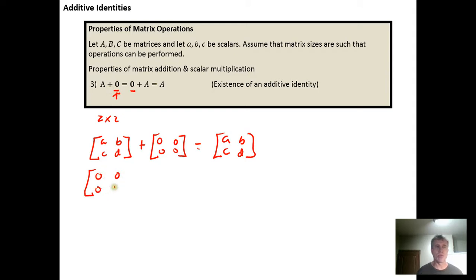So if I do the zero matrix first and add it to the matrix A, B, C, D, I'm still going to get the matrix A, B, C, D based on how matrix addition has been defined. So the 2×2 zero matrix is the additive identity for the set of all 2×2 square matrices.